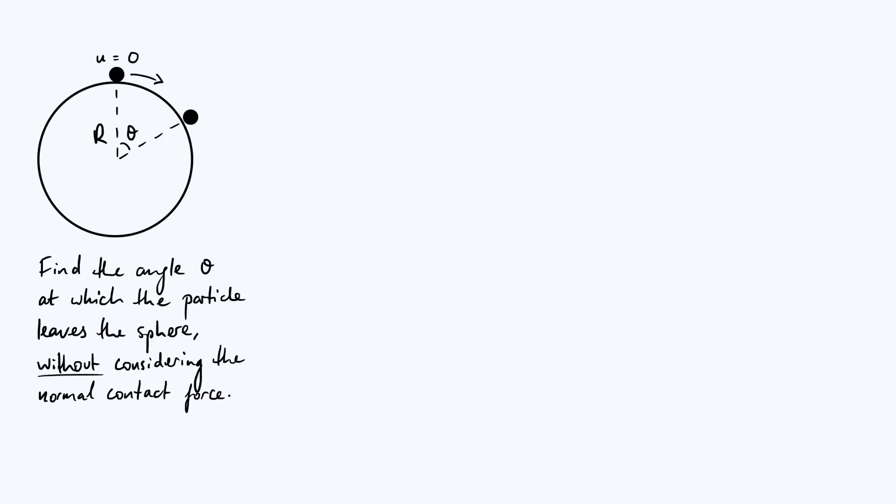Today we're going to look at this classic physics problem from a different perspective. If you haven't come across this problem before, the idea is that you have a particle sitting at the top of a sphere and you give it a little nudge so that it starts sliding down from rest. The sphere has radius r and we want to find the angle labeled theta at which the particle loses contact with the surface.